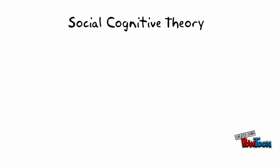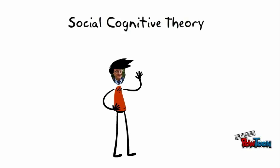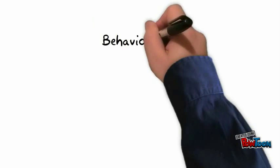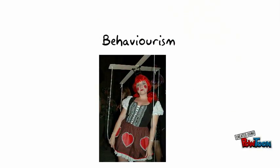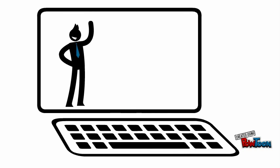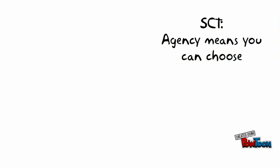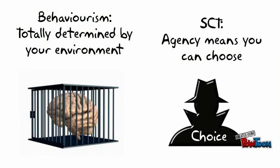Social Cognitive Theory was developed by Albert Bandura in 1977. His theory disagreed with a previous theory called Behaviorism, which argued that behavior was purely determined by our environment. Bandura's Social Cognitive Theory saw people as thinking beings who were an integral part of information processing. The single biggest difference between Social Cognitive Theory and Behaviorism was that people had agency — the ability to choose and to influence their reactions to events.